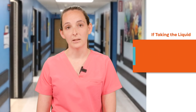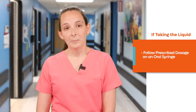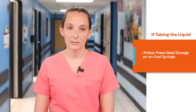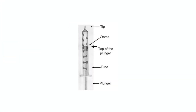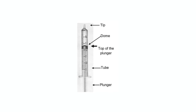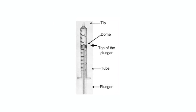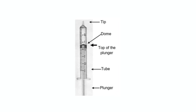If your child is taking Ondansetron liquid, make sure to pull up the prescribed dose of the medication using an oral syringe. Remember to measure the dose by lining up the top of the outer black line of the plunger with the desired dose or number on the syringe. The straight edge of the plunger is used to measure the medicine. Do not measure at the dome. Do not use a household teaspoon or tablespoon, as these are not accurate measuring devices for medication administration.